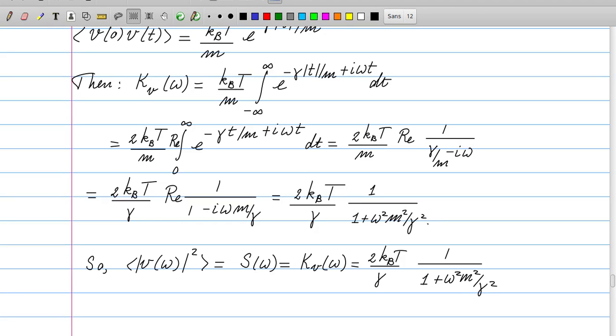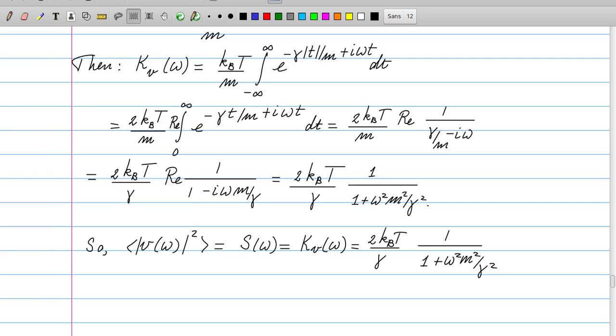So the conclusion is that the power spectrum of the velocity, we can call that S(omega), we can also call it kv(omega). That power spectrum is given by this expression that we just evaluated. And it's interesting to note that for small frequencies, so if omega is a lot smaller than gamma over m, then we have a constant power spectrum that's given by 2 kT over gamma, and then we have a decay for the large values of omega to zero.